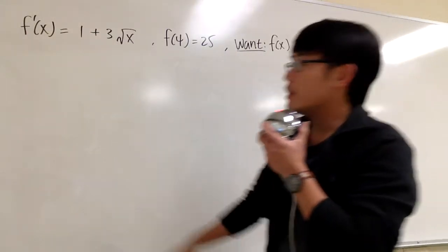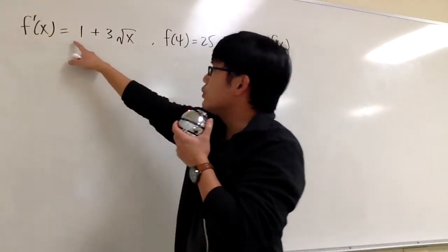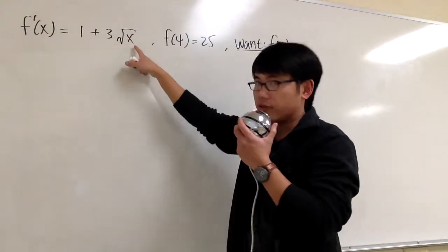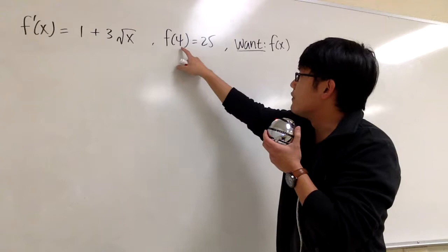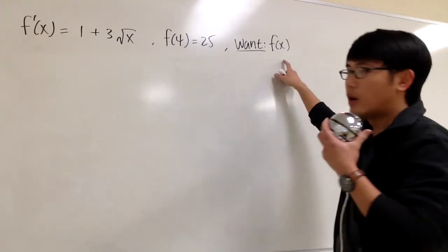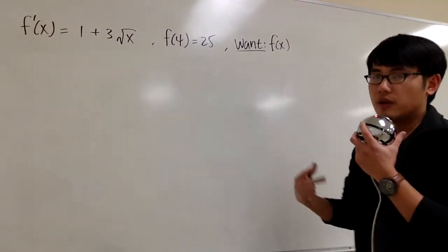Here we are given the derivative of some function. We have f'(x) is equal to 1 plus 3 square root of x. And then we also know a point on the function, which is f(4) is equal to 25. Our goal is to figure out a formula for the original function.